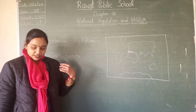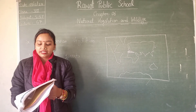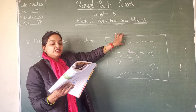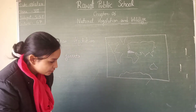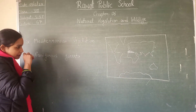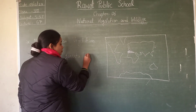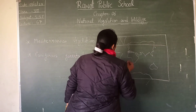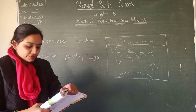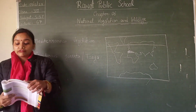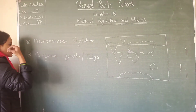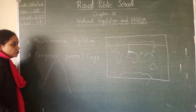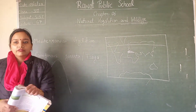Coniferous forests lie in the high latitudes of the northern hemisphere, between 50 degrees north and 70 degrees north. They are also known as Taiga. Coniferous forests also occur in areas of high altitude on mountain slopes, where you can find Taiga vegetation as well.